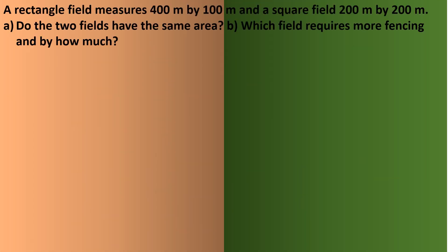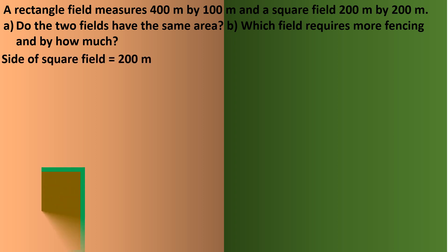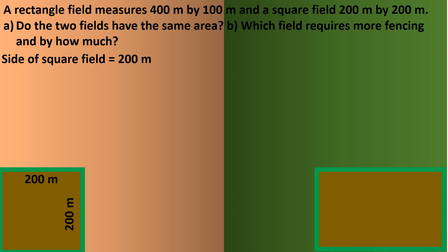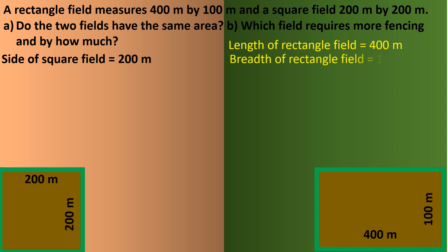One more question: A rectangular field measures 400 meters by 100 meters, and a square field is 200 meters by 200 meters. Do the two fields have the same area? Which field requires more fencing and by how much? There are two figures — the square field with side 200 meters, and the rectangular field with length 400 meters and breadth 100 meters.